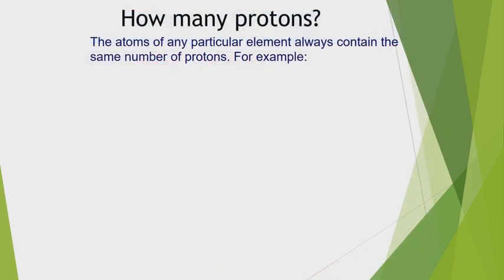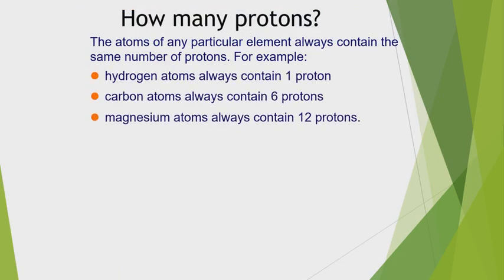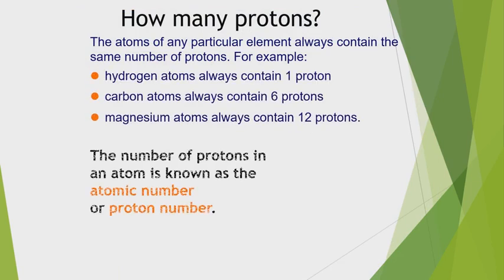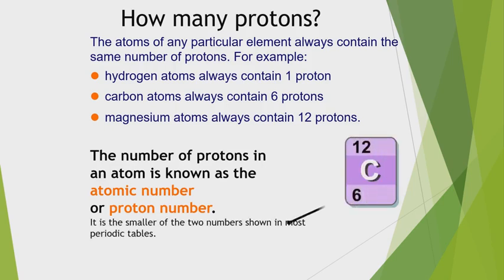How many protons? A hydrogen atom always contains 1 proton, carbon always contains 6 protons, and magnesium always contains 12 protons. The proton number in an atom is known as the atomic number or proton number. For carbon-12, the 6 at the bottom is the atomic number — it tells us the number of protons and also the number of electrons.